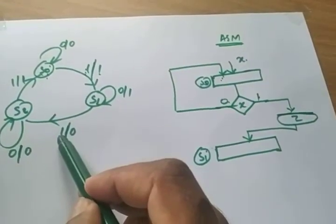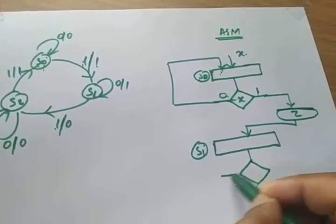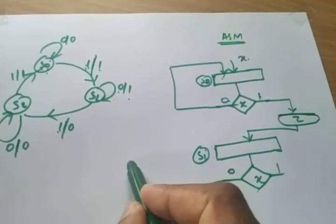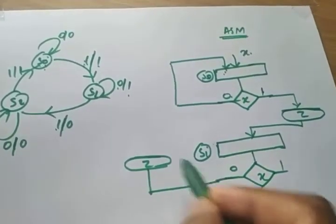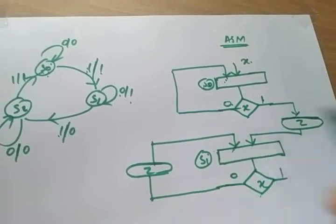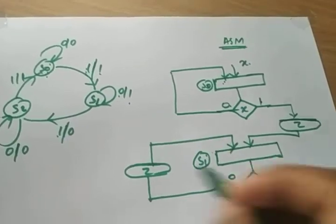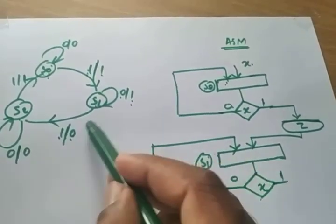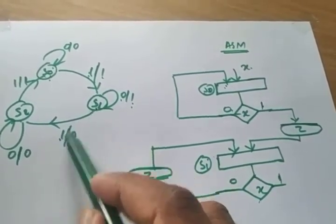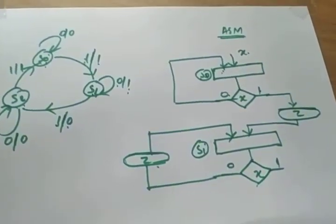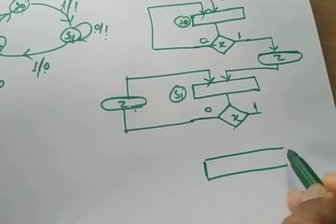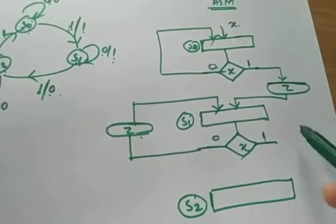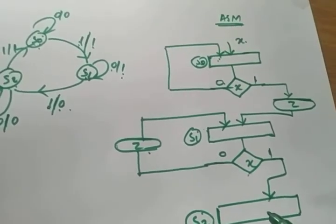Now for state S1, we have 0 input and 1 input, so I need another decision box X. For input 0, it stays in S1 with output 1 — so output Z is drawn in a condition box and it goes back to S1. For input 1, S1 goes to S2 — but output is 0, so since output is 0 we do not draw a condition box. So directly we draw another state, S2.